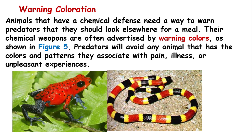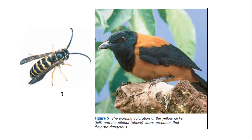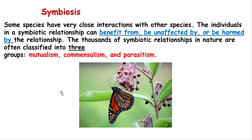Animals that have chemical defenses need a way to warn predators to look elsewhere for a meal. Their chemical weapons are often advertised by warning colors. Predators will avoid any animal that has colors and patterns associated with pain, illness, or unpleasant experience. For example, a snake will see a brightly colored red frog and avoid catching it because of its warning coloration.